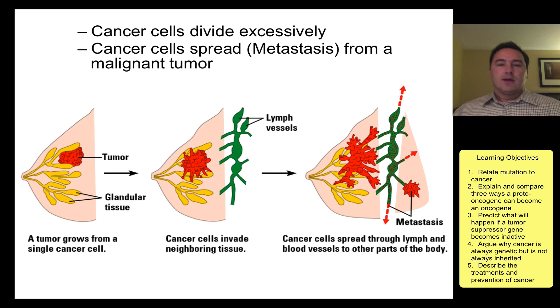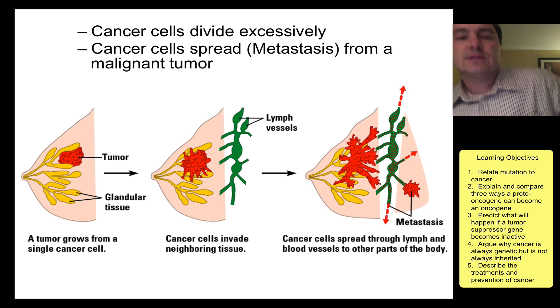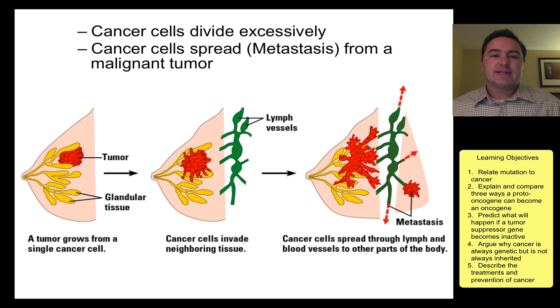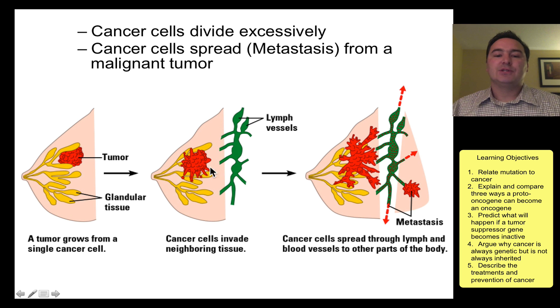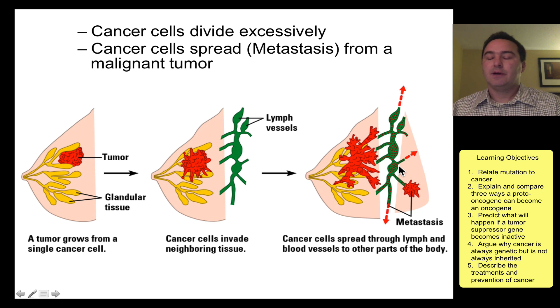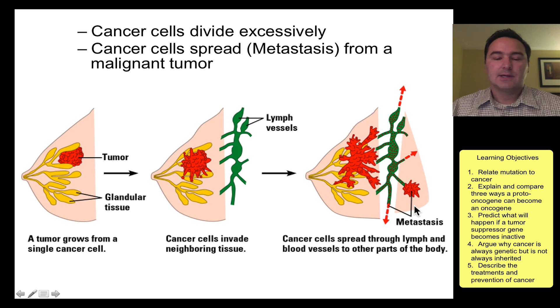When cells begin to divide excessively, this is what we call cancer. This can begin as a tumor, eventually invade other tissues, and then eventually even start to spread throughout the body through the process of metastasis.